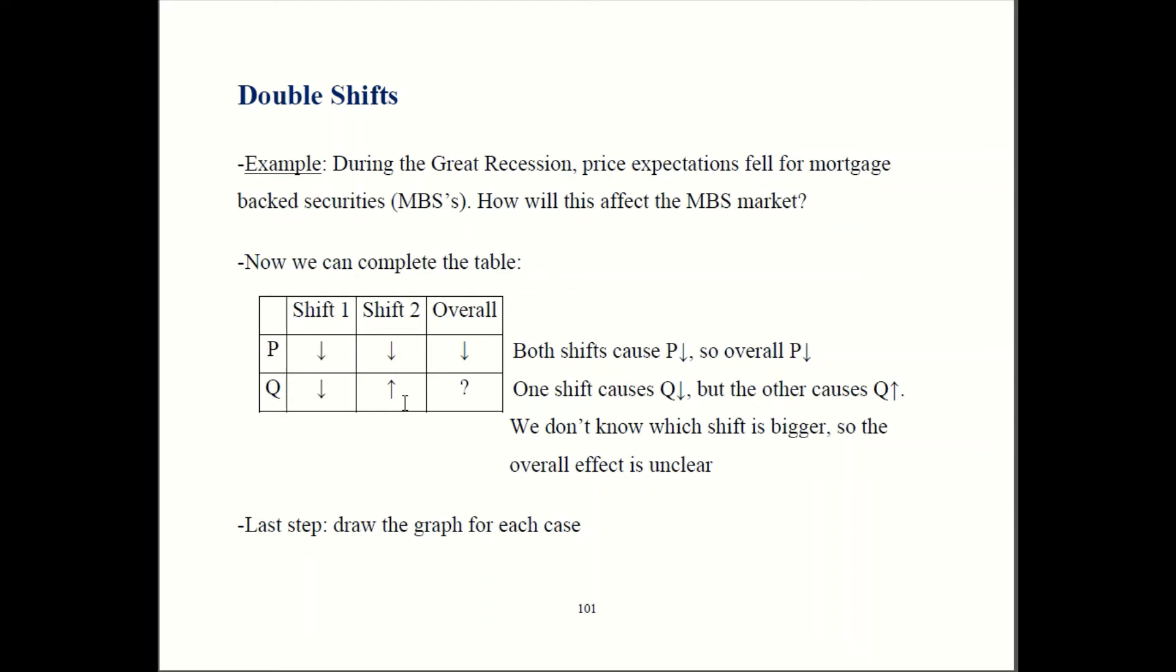Common misconception here. A lot of my students assume that the shifts will cancel out. That's not necessarily true. One shift could be bigger than another. And we just don't know. We don't have enough information right now to determine if they cancel out fully or if one's bigger than the other. So the overall effect on quantity is going to be unclear. That's why I put a question mark in the table for that.